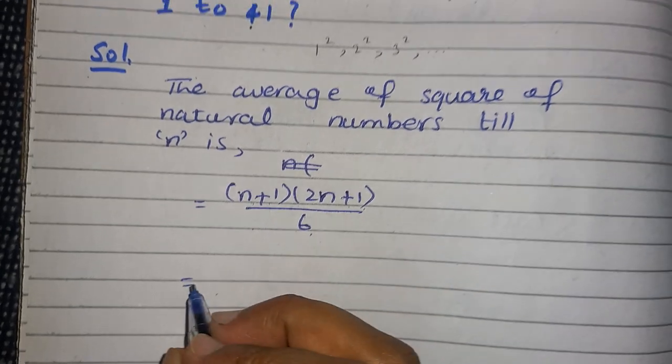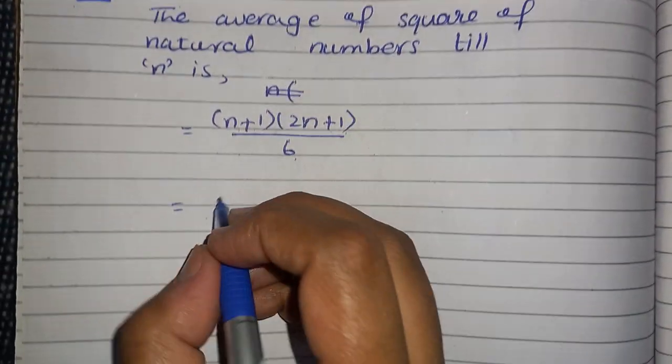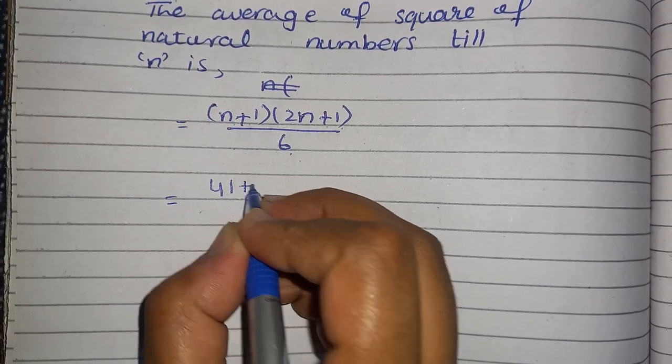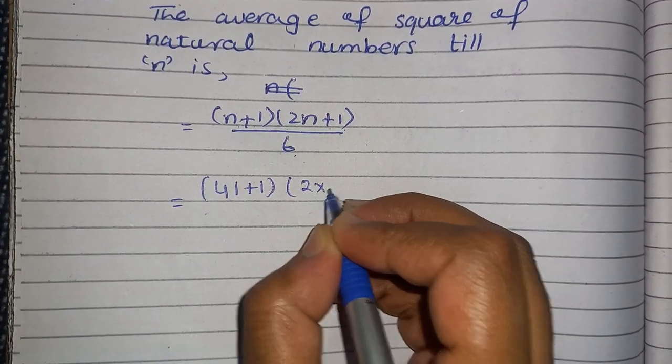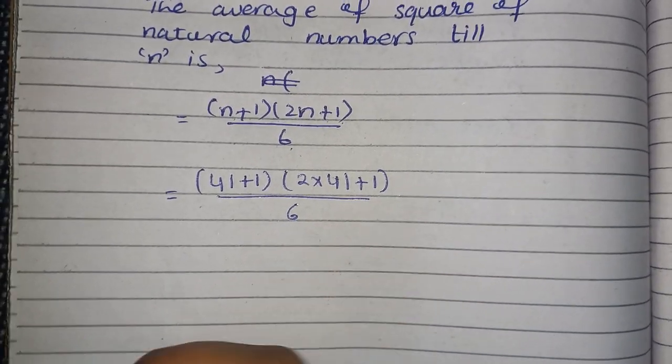Now students, from your problem, the last number is 41. So you will write 41, add it with 1 into 2 multiply by 41 plus 1 that is divided by 6.